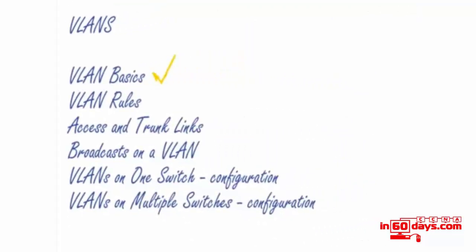Quick recap: we've covered VLAN basics, some VLAN rules, access and trunk links, broadcasts on a VLAN and the fact that only devices in the same VLAN receive a broadcast frame. Now we're going to look at VLANs on one switch — a basic configuration. We'll forget about trunk links for the moment. There are lots of VLAN labs on howtonetwork.net, and I recommend having a good understanding of the theory as well.